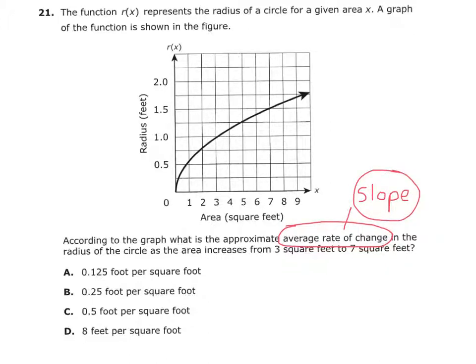Okay, so basically what we're doing is calculating the slope, but let's see where they want us to calculate it. Because this is a curve, so the slope is not the same everywhere on this curve. Okay, now it says in the radius of the circle as the area increases from 3 feet to 7 what? Feet.